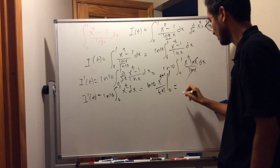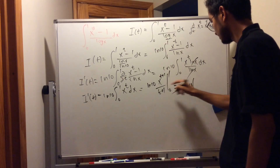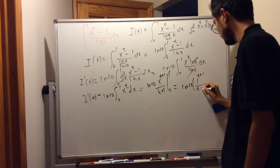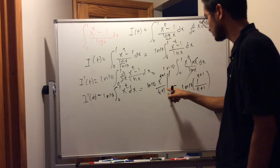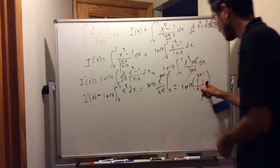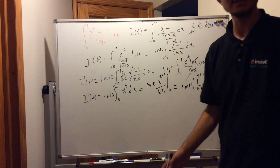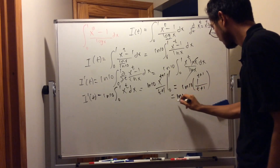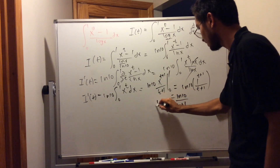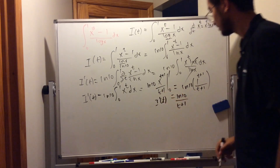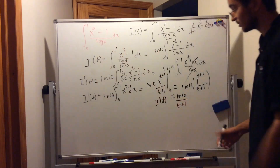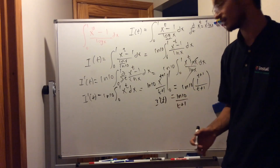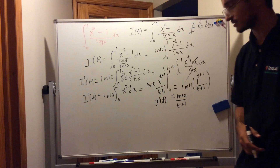We get ln(10) times 1 to the power of t plus 1, all divided by t plus 1. If we substitute 0 in, that's just 0, so we don't have to add that. Now 1 to the power of t plus 1 — well, 1 to the power of anything is just 1. So we have that i'(t) is equal to ln(10) divided by t plus 1.